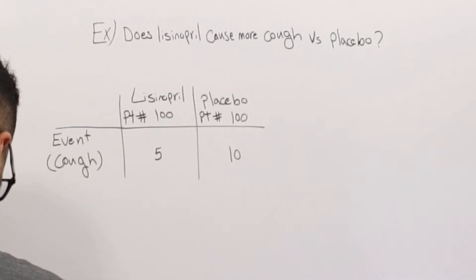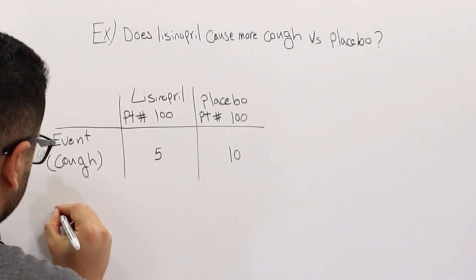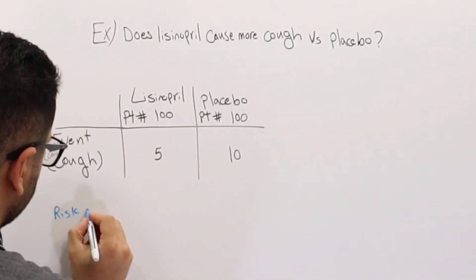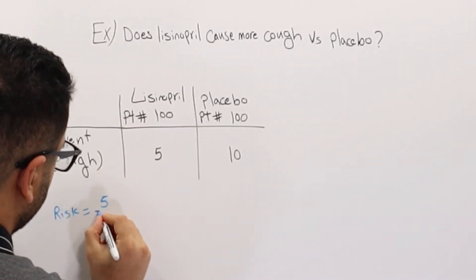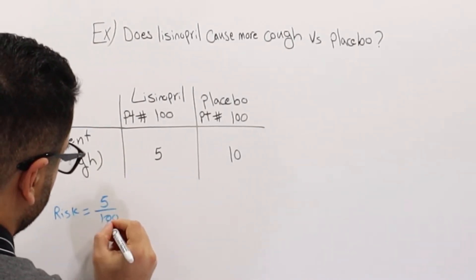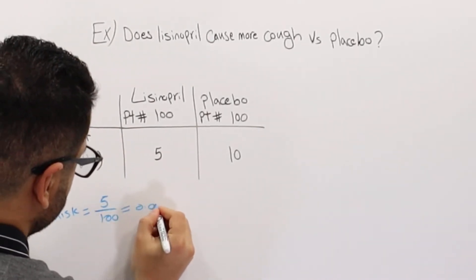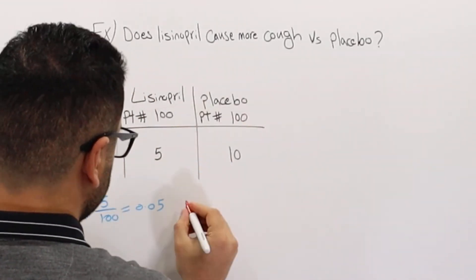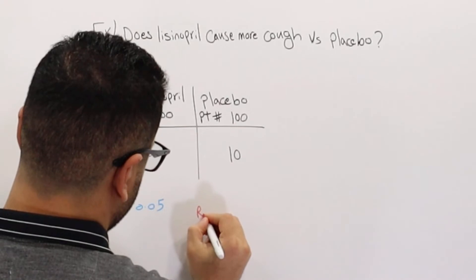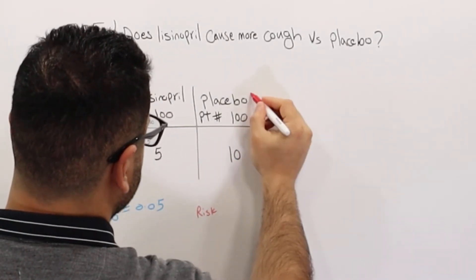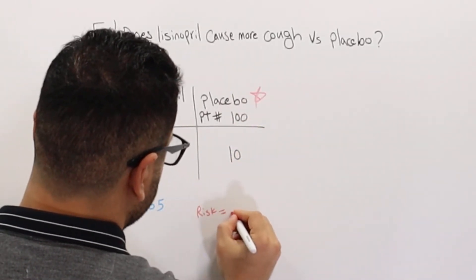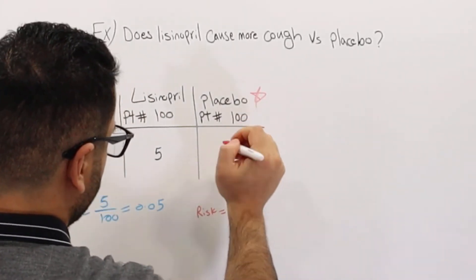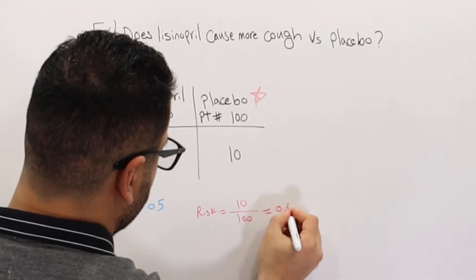The risk for lisinopril (the treatment group) is the number of people with the event — 5 — over the total of 100, giving us 0.05. The risk for placebo is 10 over 100, giving us 0.1.